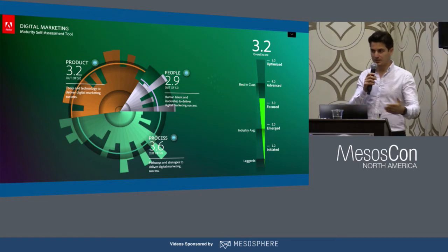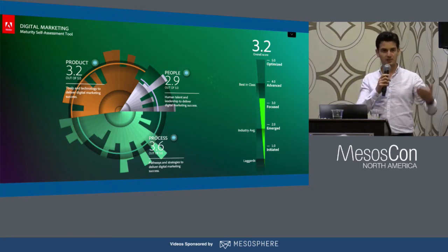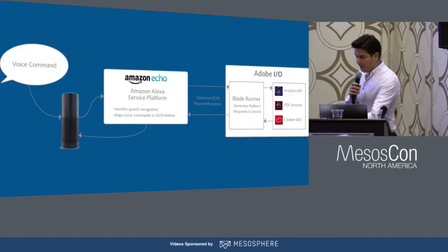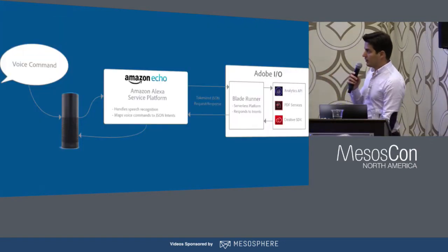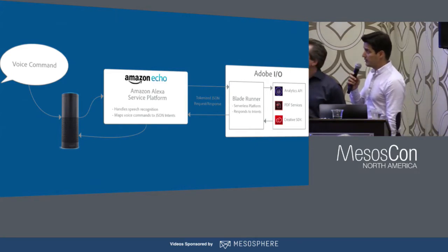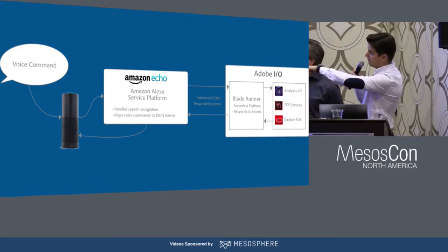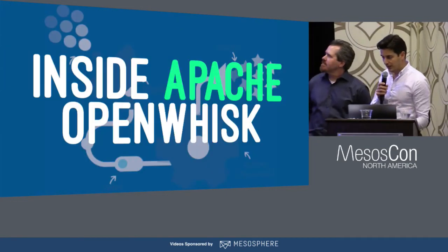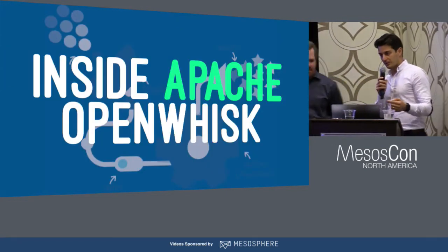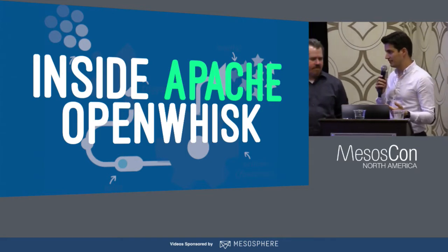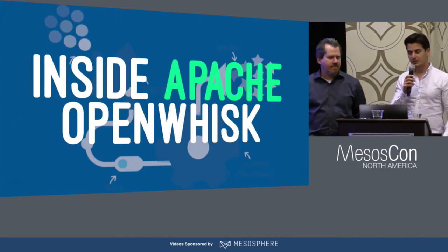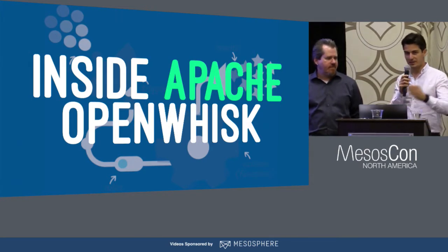I demoed a very simple interaction — it's real time and I was able to get an answer back from a very complex system. What happened: I gave a voice command, it went to Amazon Echo, circled back to Adobe.io, and got a response back. Now let's look a little bit inside Apache OpenWhisk, and I'm going to hand the microphone over to Tyson, my colleague. We're both working for the team in Adobe called Adobe.io — the interface between Adobe services and third-party developers.